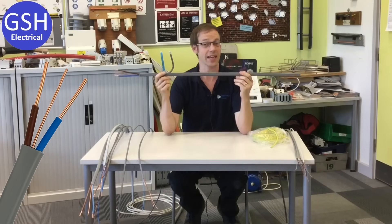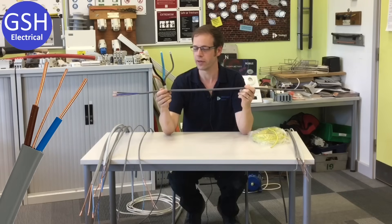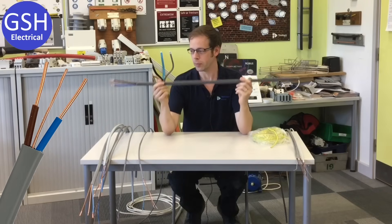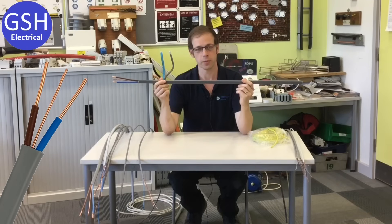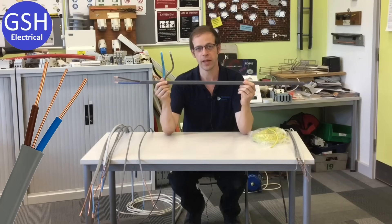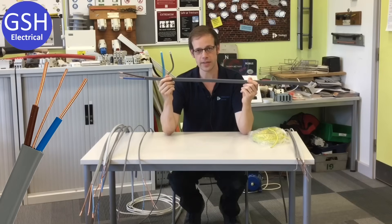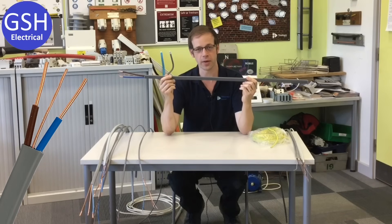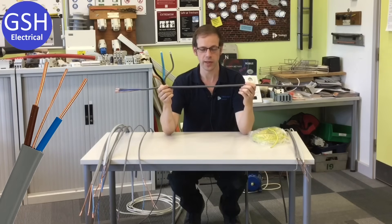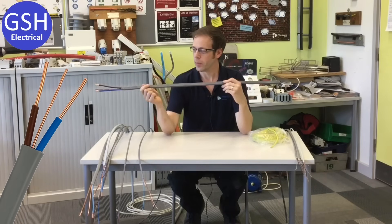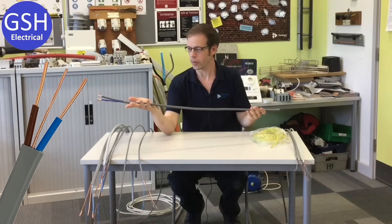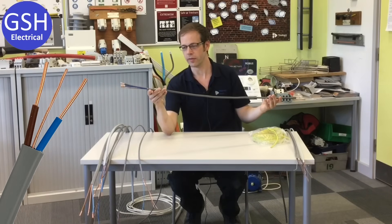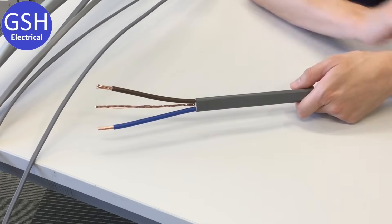Of course that is the vernacular term for it. What we're going to be referring to it here by its proper name. Its proper name, as we refer to it in the college—I'm sure there'll be lots of sparks watching this cracking up when I say this—we refer to this as PVC PVC thermoplastic twin and CPC cable. Now that's quite a mouthful, and when you go into the wholesalers there's no way you're going to be asking for that. You ask for twin and earth and you know what you're going to get. But let's break down that big long name by having a look at the structure of this cable.